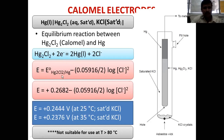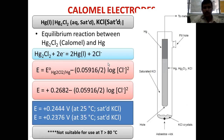E is equal to E° of the Hg₂Cl₂/Hg couple minus 0.05916 divided by 2, because two electrons have been added. The oxidation state of mercury here is +1, not +2, so there are two mercury (+1) atoms meaning two electrons are required to convert +1 mercury to zero-valent mercury. Therefore: log of [Cl⁻] concentration to the power of 2, since the stoichiometry of chloride in the reaction is 2.